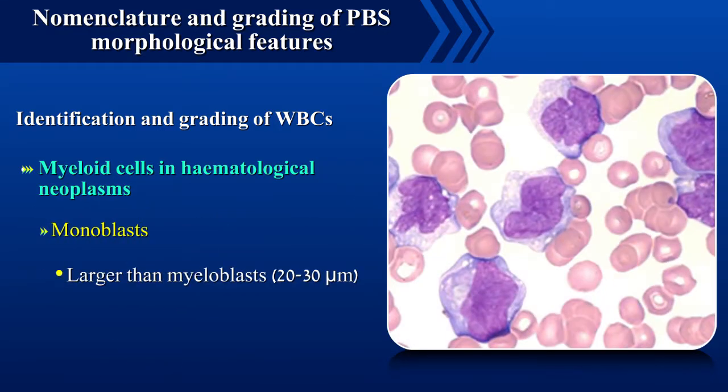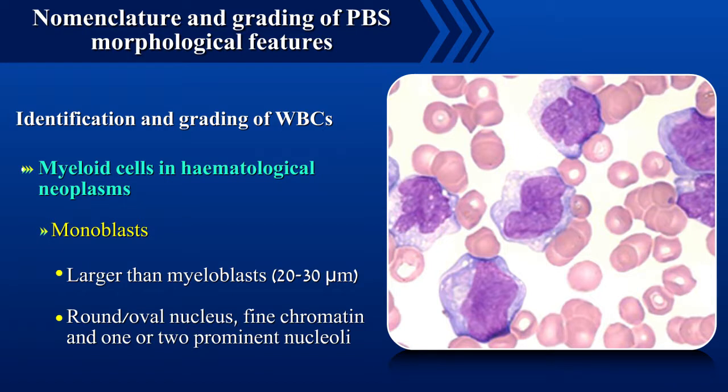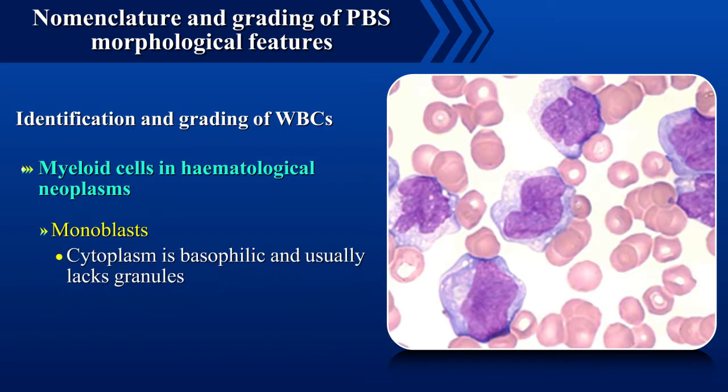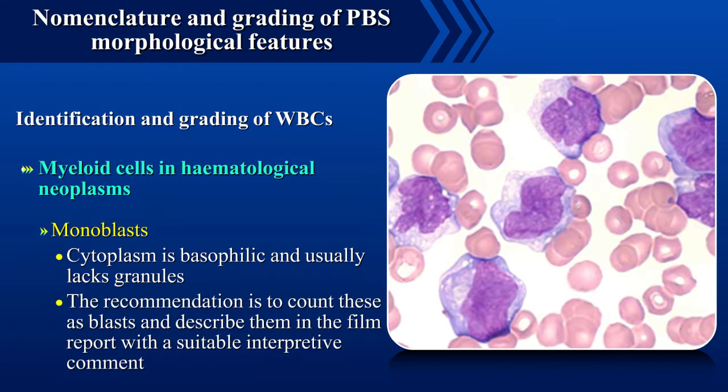Monoblasts are larger than myeloblasts, about 20 to 30 microns in size, with a round to oval nucleus, fine chromatin, and one or two prominent nucleoli. The cytoplasm is basophilic and usually lacks granules. The recommendation is to count these as blasts and describe them in the film report with a suitable interpretive comment.